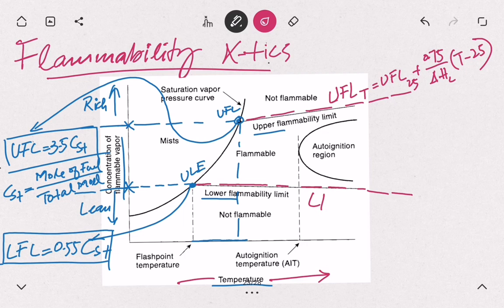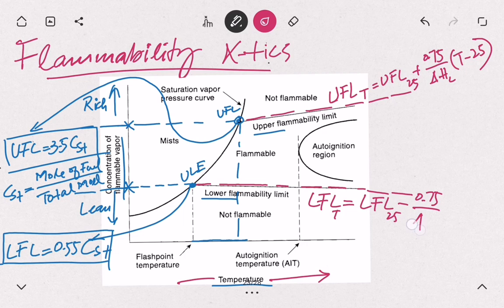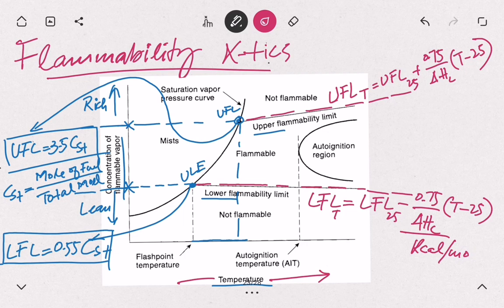Similarly, the lower flammability limit at any given temperature equals the lower flammability limit at 25°C — which is normally available in the literature — minus 0.75 divided by the heat of combustion, multiplied by the temperature we are studying minus 25°C. The unit of the net heat of combustion in this formula is kilocalories per mole — the unit is very important.